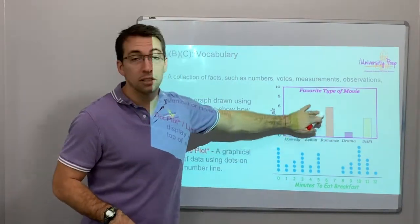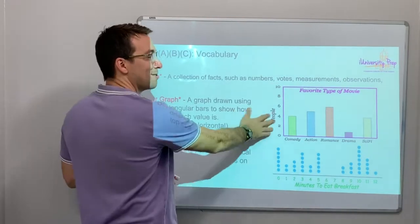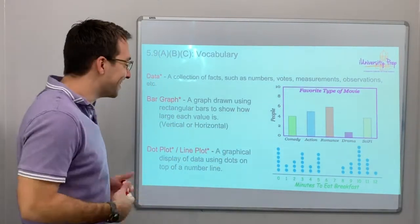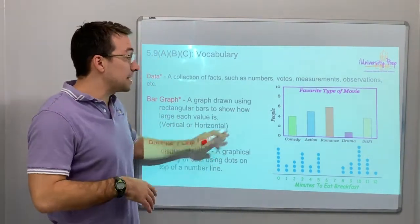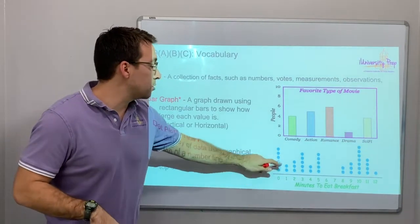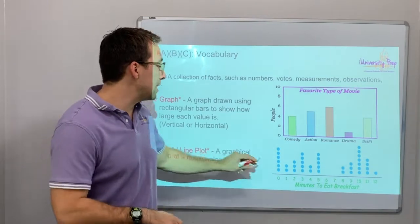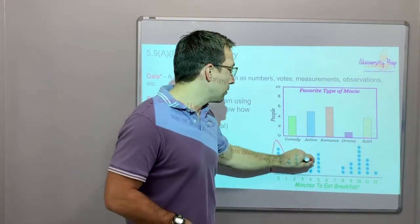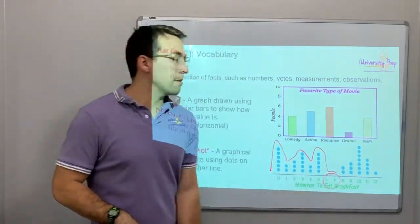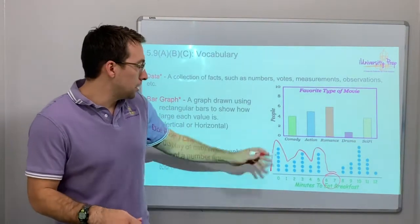A dot plot, similar to a bar graph except you just have individual dots or x's. These are good for visuals. You can see like, oh look, right, nobody takes six or seven minutes to eat breakfast. And here's zero.